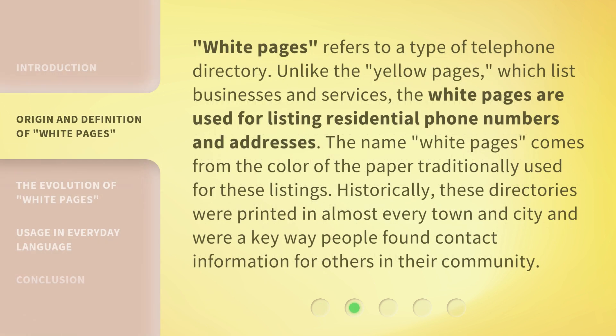White Pages refers to a type of telephone directory. Unlike the Yellow Pages, which list businesses and services, the White Pages are used for listing residential phone numbers and addresses. The name White Pages comes from the color of the paper traditionally used for these listings. Historically, these directories were printed in almost every town and city and were a key way people found contact information for others in their community.